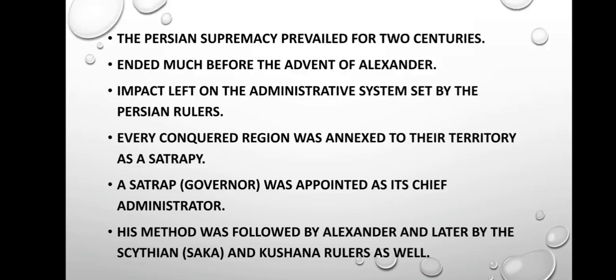The Persian supremacy prevailed in India for at least two centuries. However, it had ended much before the advent of Alexander. Thinking of the impact left by the Persian contact, one notable aspect is the administrative system set by the Persian rulers. Every conquered region was annexed as a satrapy, and a satrap or governor was appointed as its chief administrator. This method was followed by Alexander, and later by the Scythian, Saka, and Kushana rulers as well.